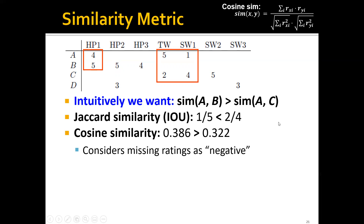Another option is cosine similarity. To compute cosine similarity, we need two full vectors, so we fill in the blanks using zeros and then calculate the cosine similarities. We can see that the similarity between A and B is finally larger than between A and C, but only slightly — and this is not good enough. The reason is that cosine similarity treats missing ratings as negative, because in the rating matrix the scale is 1 to 5, so zeros represent very low and very negative ratings.